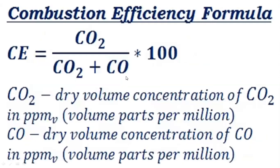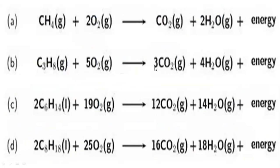Combustion efficiency can be estimated by measuring carbon dioxide and carbon monoxide, or alternatively as heat out divided by heat in. Just by measuring CO2 and CO we can arrive at combustion efficiency. Different fuel combinations require proportionate amounts of oxygen to develop energy. The more dense the fuel, the more oxygen it requires, resulting in more carbon dioxide and more energy. Different fuels have different levels of oxygen requirement for producing heat and energy.